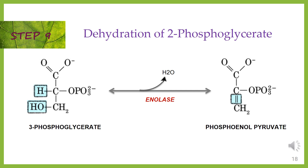Step 9: dehydration of 2-phosphoglycerate. Enolase is an enzyme that removes a water molecule from 2-phosphoglycerate to form phosphoenolpyruvate (PEP).